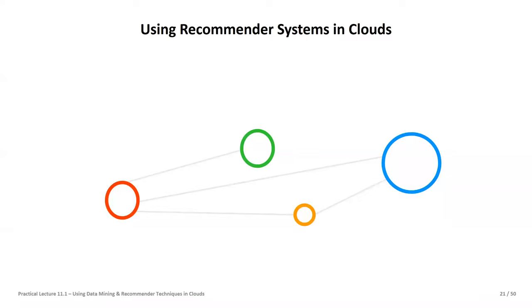Welcome back everyone for Cloud Computing and Big Data, practical lecture 11: using data mining and recommender techniques in clouds. In the first part of the lecture we largely looked at association rule mining, which is one specific form of data mining that is incredibly often used and in a way a very cheap, trivial algorithm.